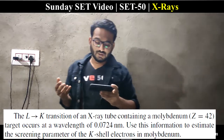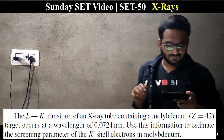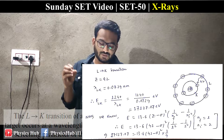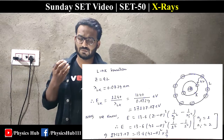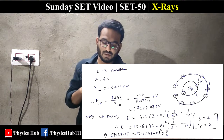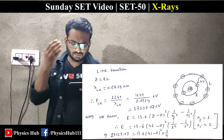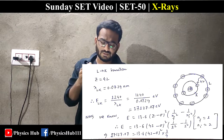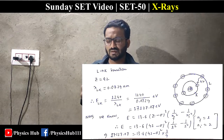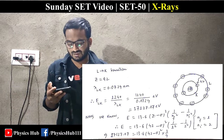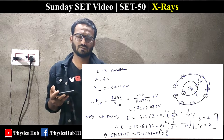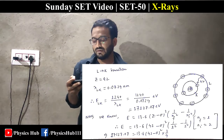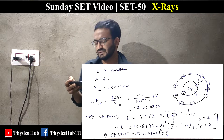Question 1: The L-to-K transition of an X-ray tube containing a molybdenum target (Z = 42) produces a wavelength of 0.0724 nanometers. Use this information to estimate the screening parameter of the K-shell electrons in molybdenum. From the L-to-K transition and the given wavelength, we first find the energy E_LK using E = 1240/λ.